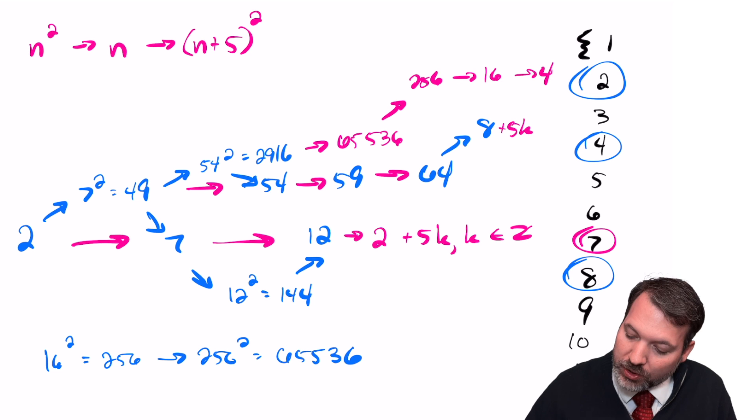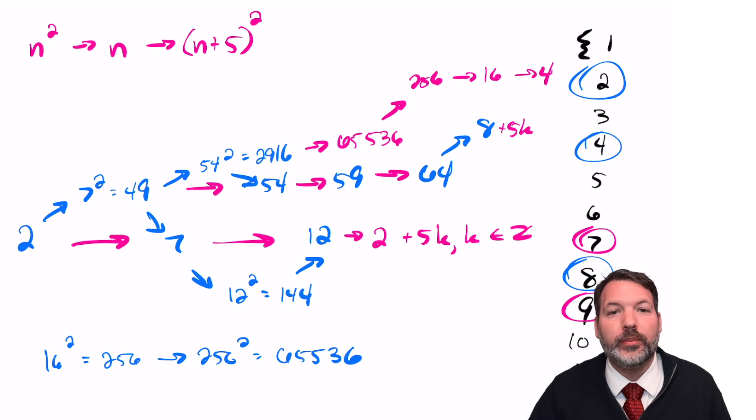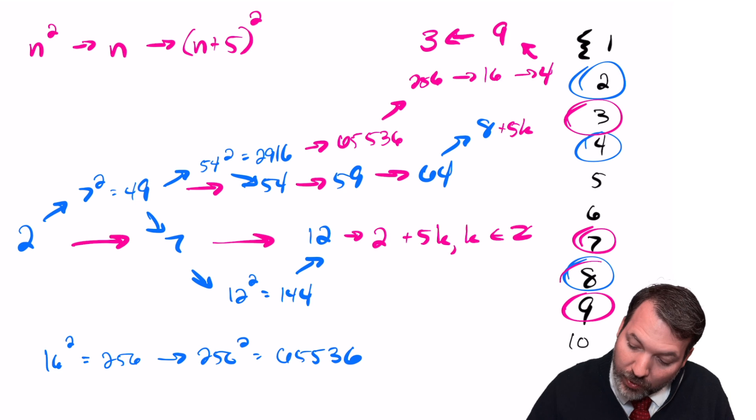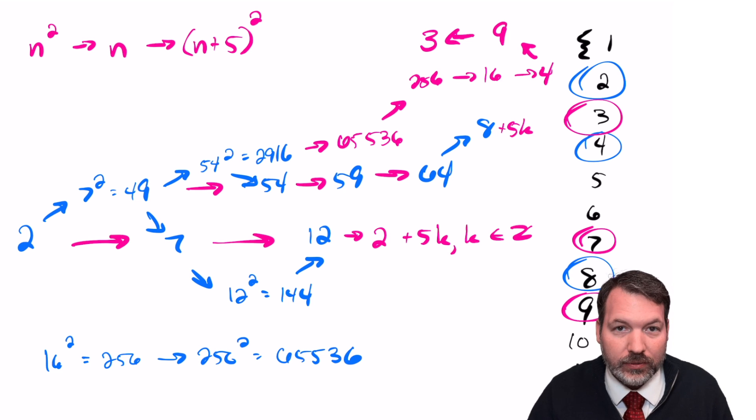So eventually somewhere down the line from 2,916, we will get to 65,536 and that means we get 256 and that means we get 16 and that means we get 4. Once we have 4, of course, we also get all the numbers 5, 10, 15 greater than 4, which means we also have 9. And if we have 9, I need to go the other direction here, I'm running out of room. If we have 9, we also have 3. If we have 3, we have 8, though you'll notice we actually already had 8.